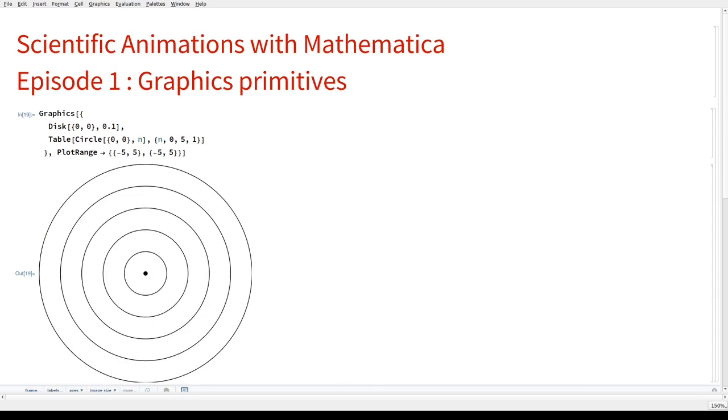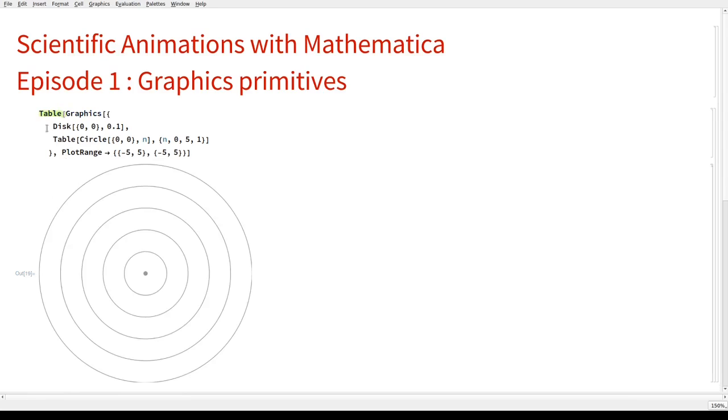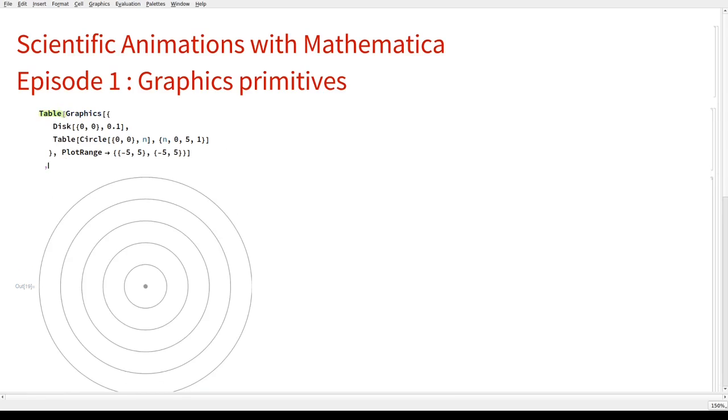Now, what we would really like is for these circles to move and to expand at constant speed. So to do that, we are going to create a table around everything here. Our new variable is going to be time. Time is going to be passing between, let's say, zero and five in step of 0.1. It doesn't really matter. We are going to adjust all those parameters later.